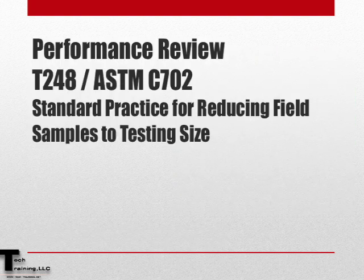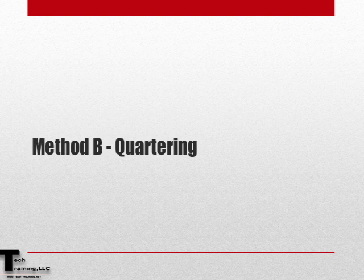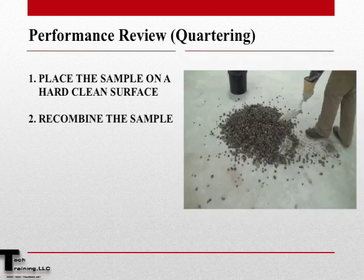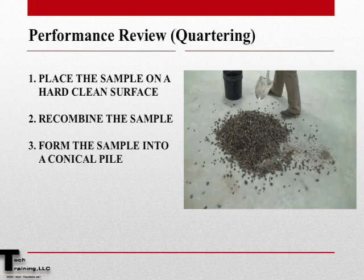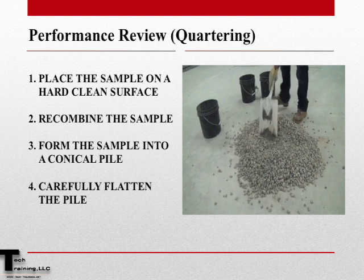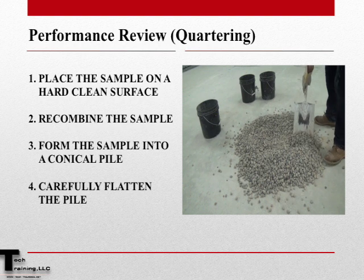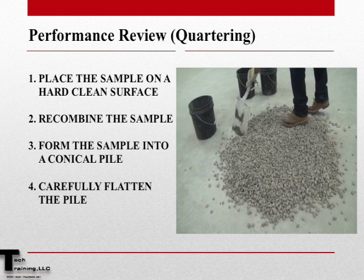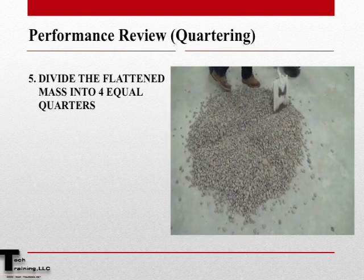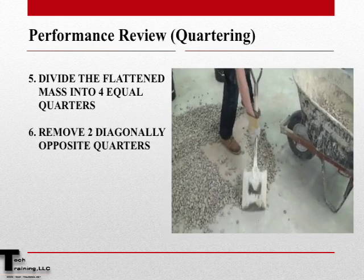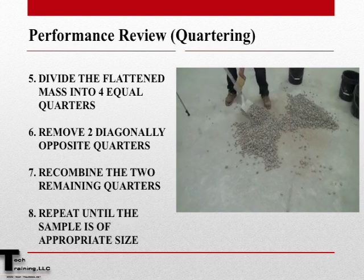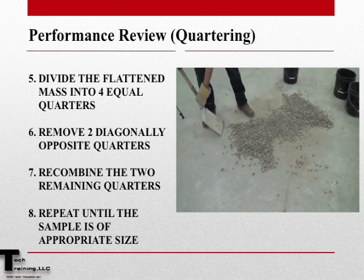Let's go through the performance review of Method B, quartering a sample. After checking the floor for evenness, place the sample on a hard, clean surface. Once placed, recombine the sample and form it into a conical pile. Carefully flatten the conical pile by pressing down on the apex of the cone. When finished, the sample should be in a circular shape of even thickness throughout. Then split the sample into four equal quarters. Remove two quarters which are diagonally opposite each other and recombine the other two quarters. Repeat this process until the field sample has been reduced to the appropriate testing size.